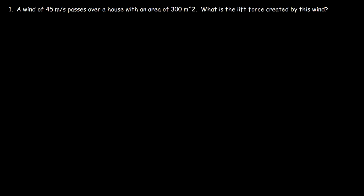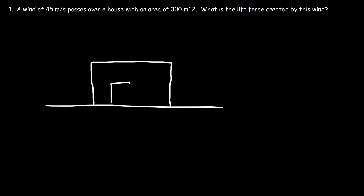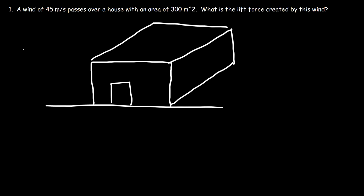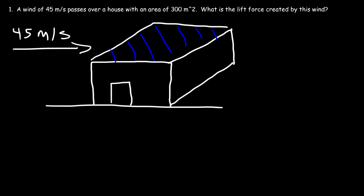A wind of 45 meters per second passes over a house with an area of 300 square meters. What is the lift force created by this wind? Let's start with a picture. Let's say this is a rectangular house, just to keep things simple. There's a wind moving at 45 meters per second that passes over the house, and the area of the top surface of the house is 300 square meters.